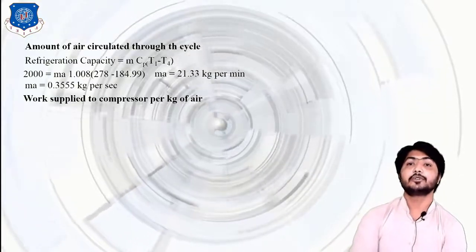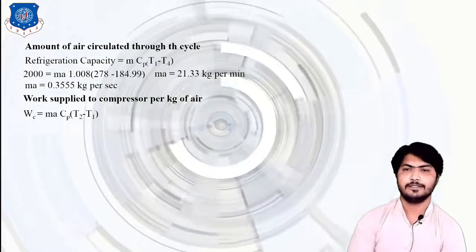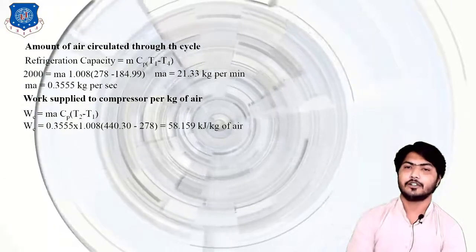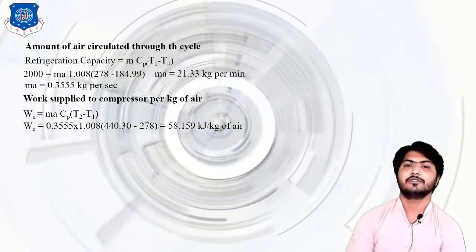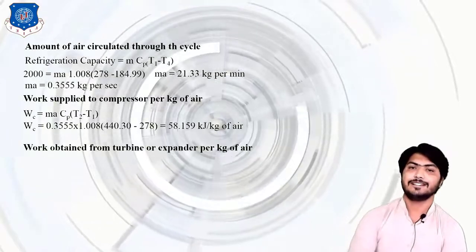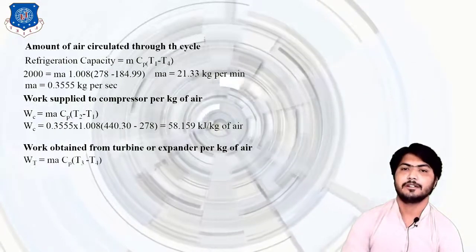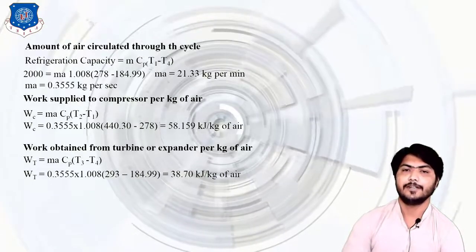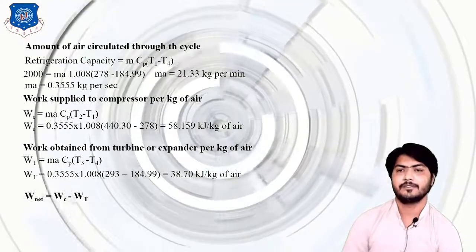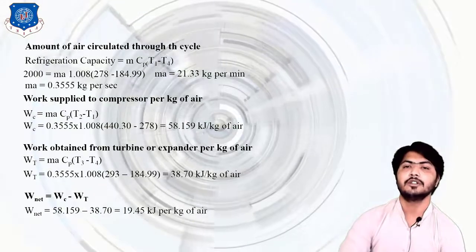Work supplied to the compressor: Wc = M × CP × (T2 − T1), giving 58.159 kJ (total, not per kg, since mass is already included). Work obtained from the turbine: Wt = M × CP × (T3 − T4) = 38.70 kJ. Net work: Wnet = Wc − Wt = 58.159 − 38.75 = 19.45 kJ. Note: these are not per kg values since the mass M = 0.355 kg/s was already substituted.